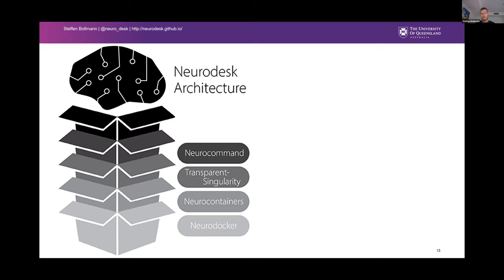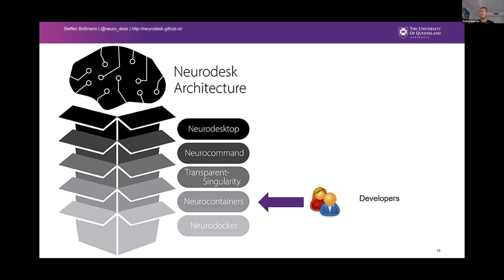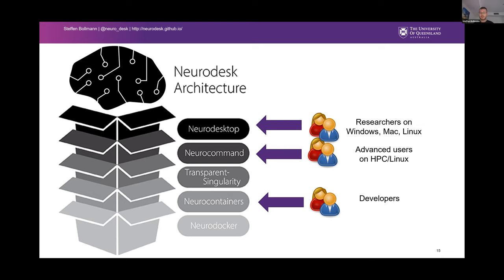We built another tool called NeuroCommand that manages different containers, isolating container and software dependencies from each other and allowing multiple containers to run and be combined. On top of all this we built NeuroDesktop — a full desktop environment that runs in the browser, making everything accessible without installing anything beyond a browser. This gives different entry points: tool developers can submit a recipe directly to the NeuroContainers platform and everything gets automatically built; advanced users can use NeuroCommand on HPC or Linux with only Python and Bash as dependencies; and standard researchers with Windows, Mac, or Linux can start with NeuroDesktop.